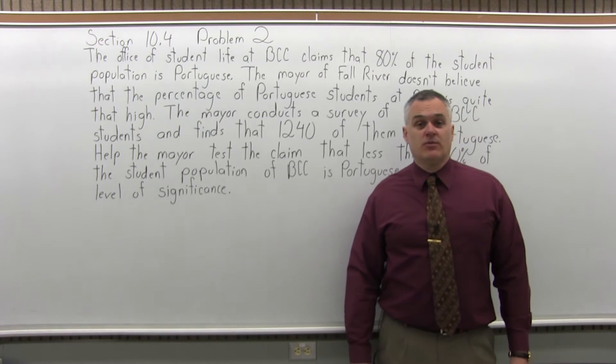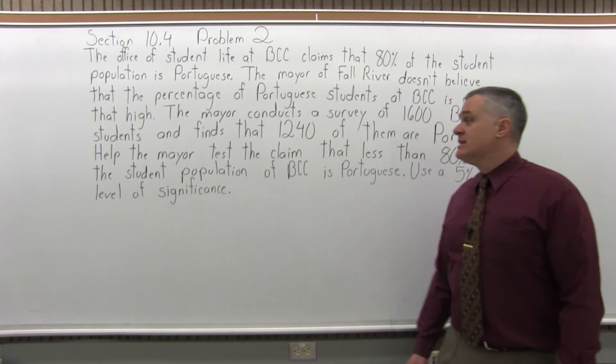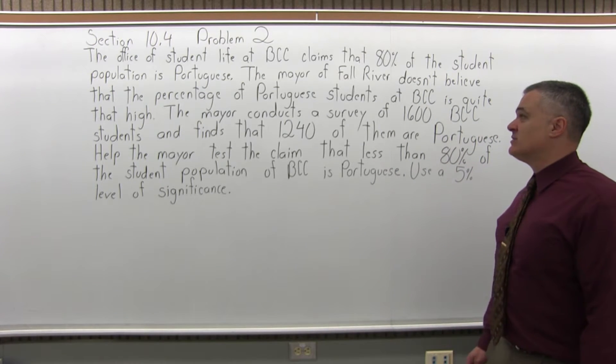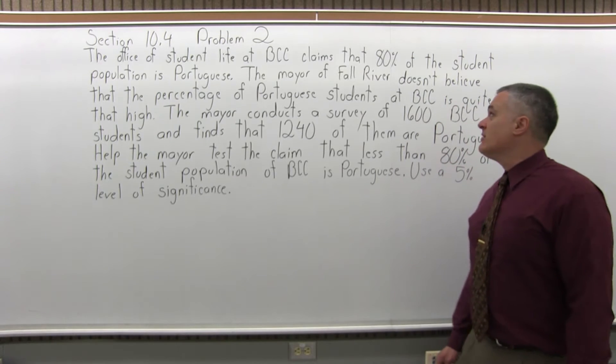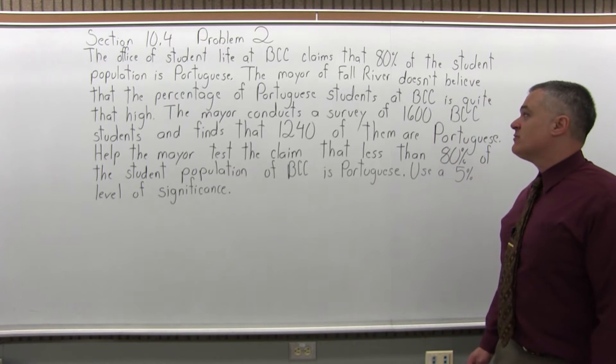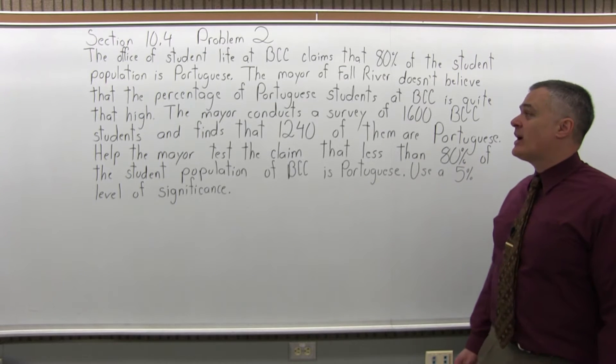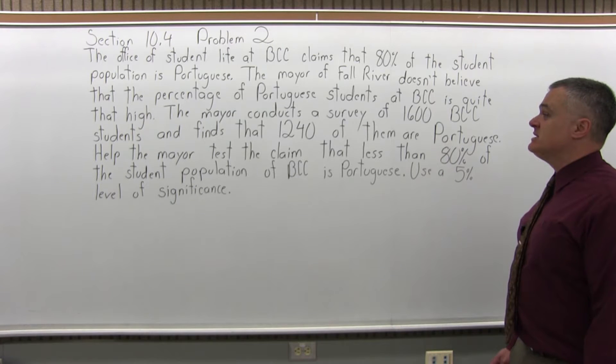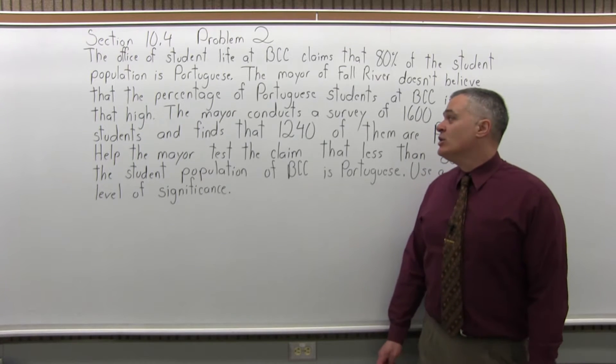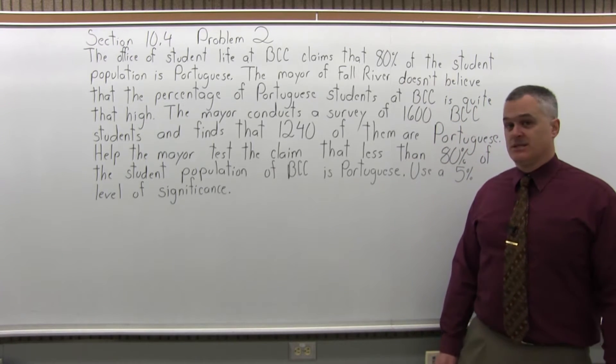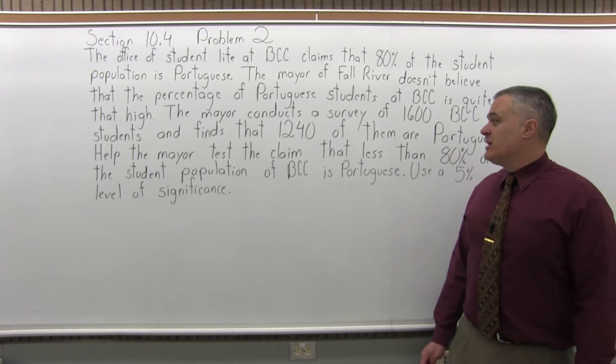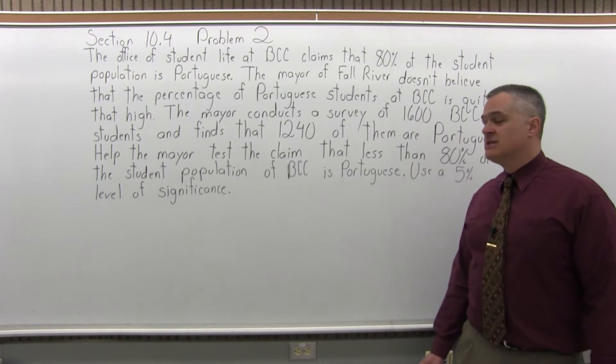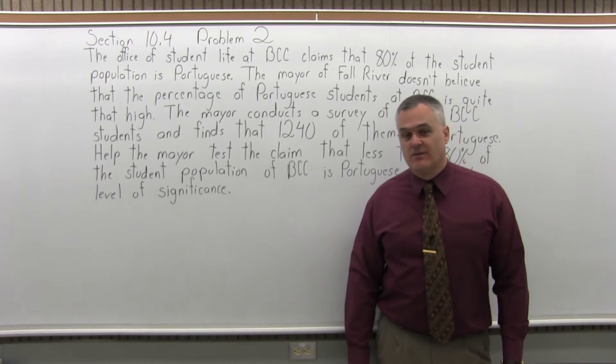This is Section 10.4, Problem 2. It says, the Office of Student Life at BCC claims that 80% of the student population is Portuguese. The mayor of Fall River doesn't believe that the percentage of Portuguese students at BCC is quite that high. The mayor conducts a survey of 1,600 BCC students and finds that 1,240 of them are Portuguese. Help the mayor test the claim that less than 80% of the student population of BCC is Portuguese. Use a 5% level of significance.